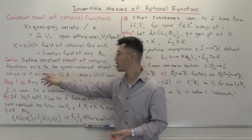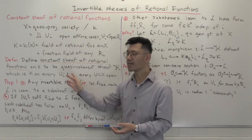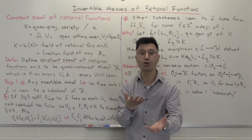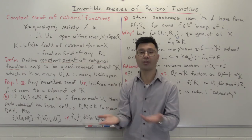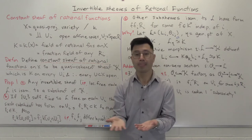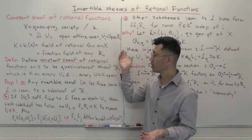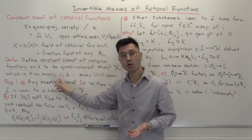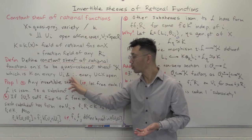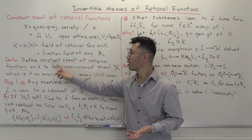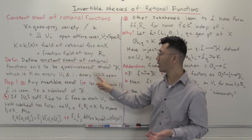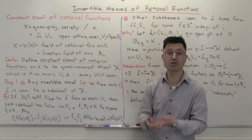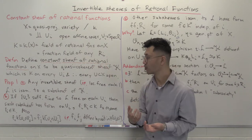The other thing you need to give is descent data: how you glue on the intersection of U_i and U_j. Well, in both cases they're just equal to this k, so you just have the identity essentially. And if you go through the sheaf property, you'll find that this sheaf is actually a constant k on every non-empty open U inside X. That's why it's called the constant sheaf of rational functions.